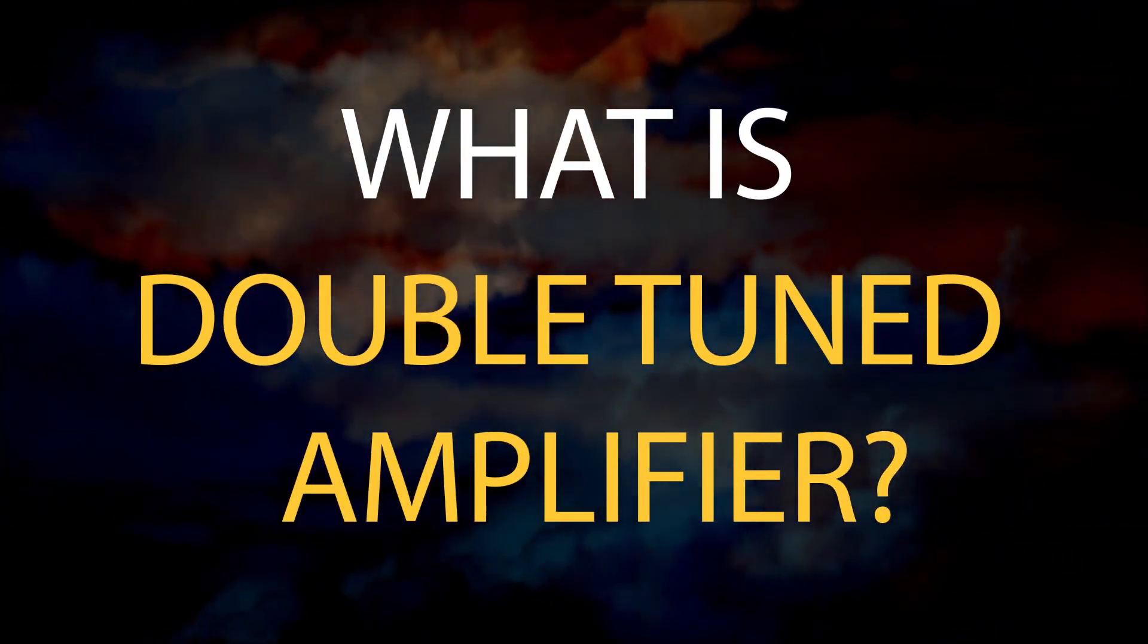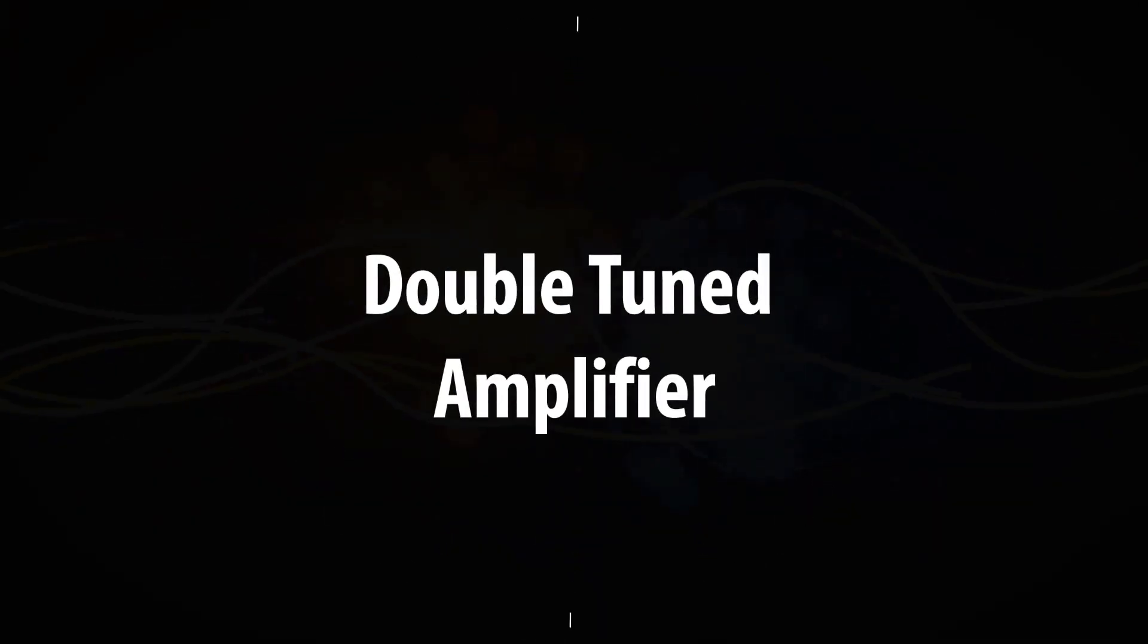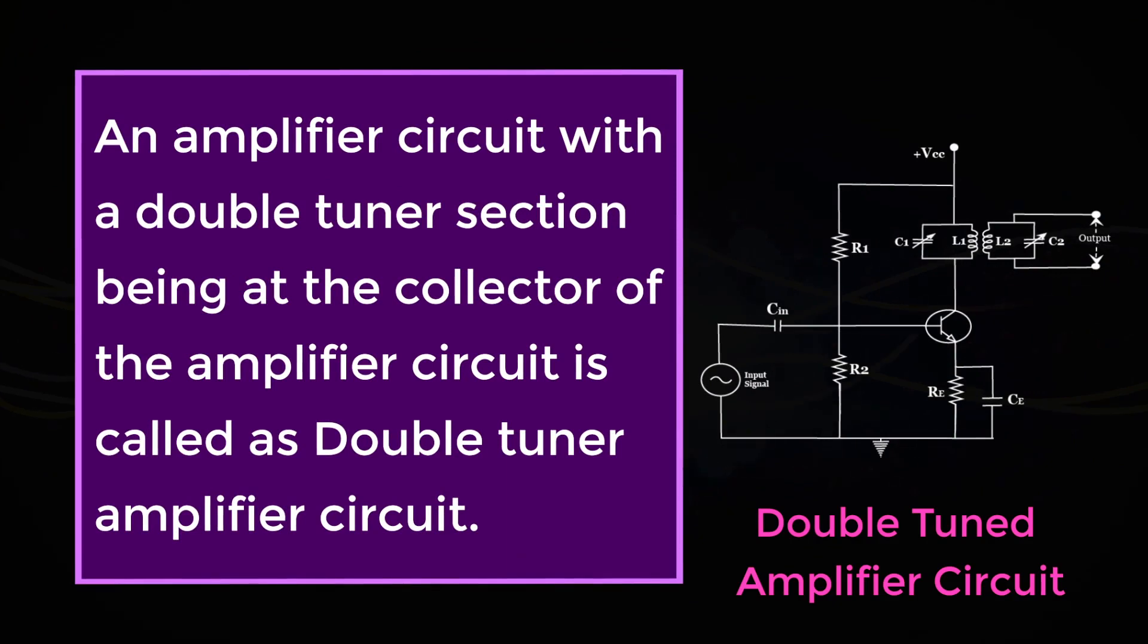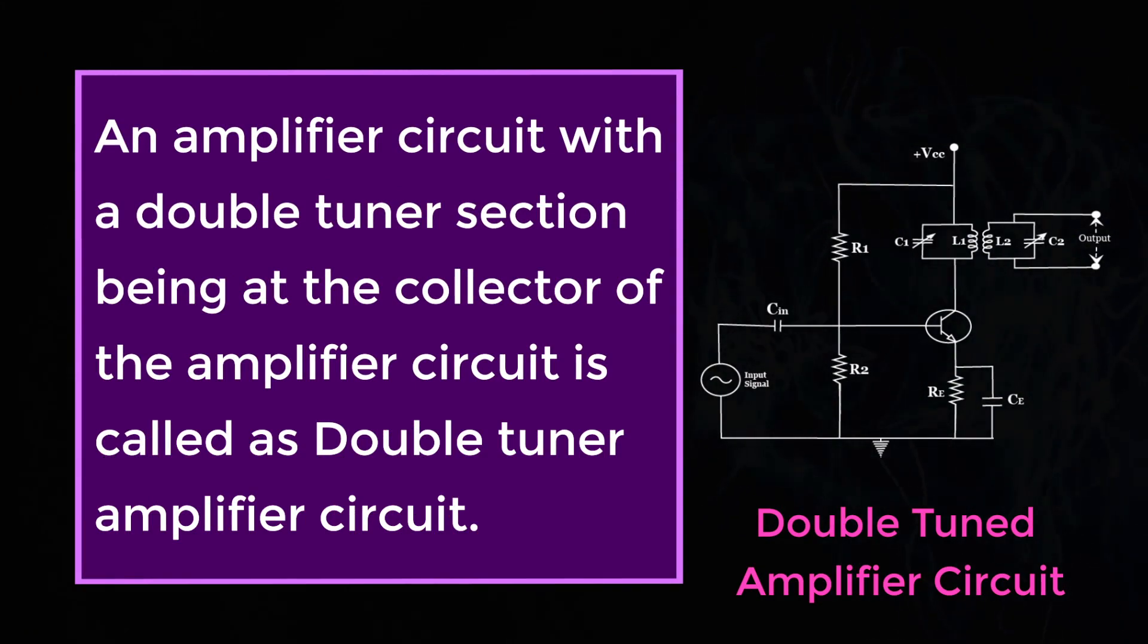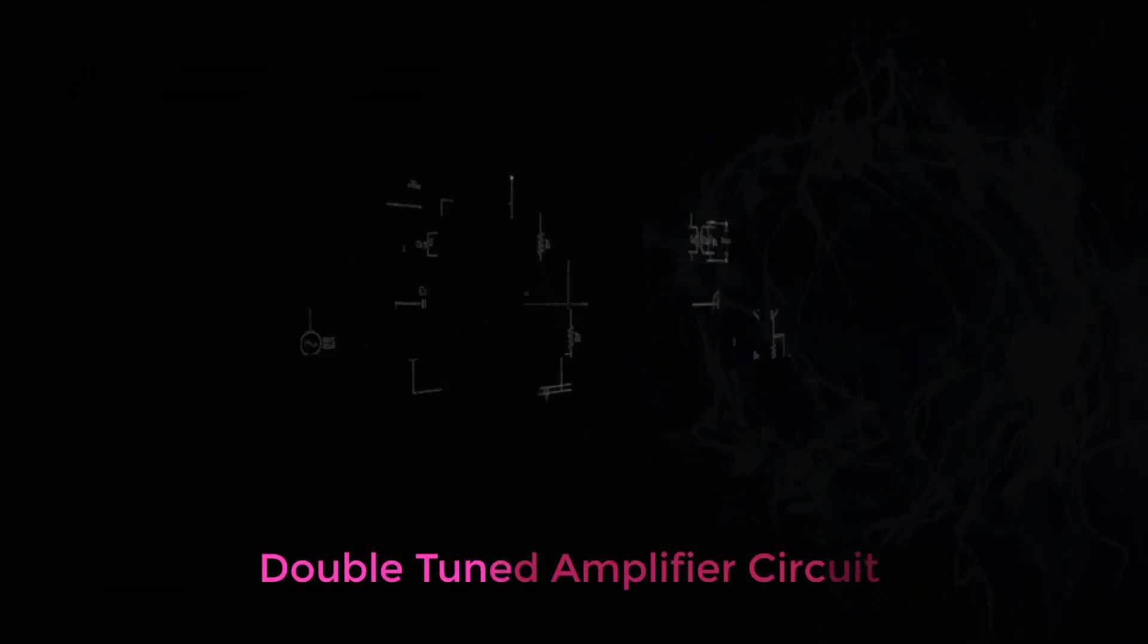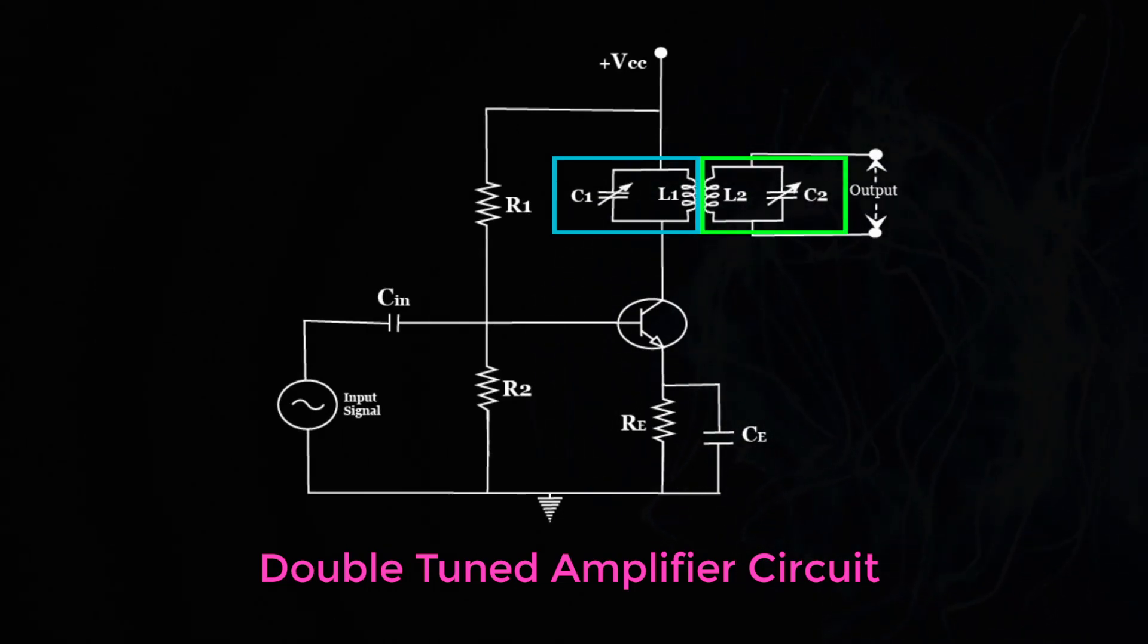What is a double tuned amplifier? An amplifier circuit with a double tuner section at the collector of the amplifier circuit is called a double tuned amplifier circuit. This consists of two tuned circuits, L1 C1 and L2 C2, in the collector section.